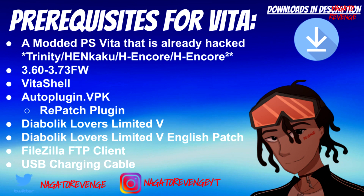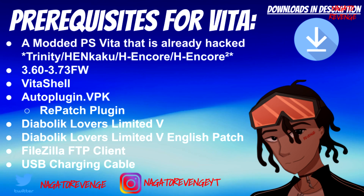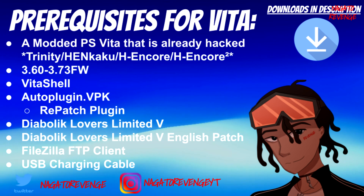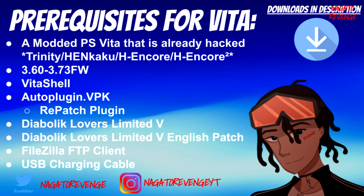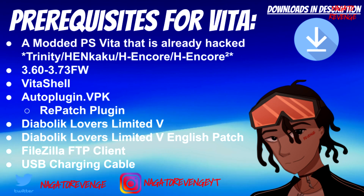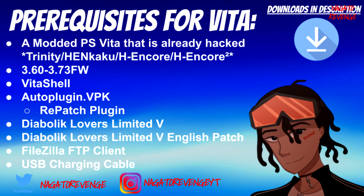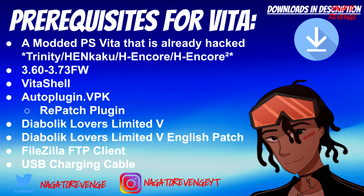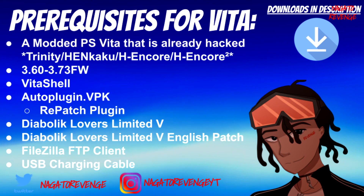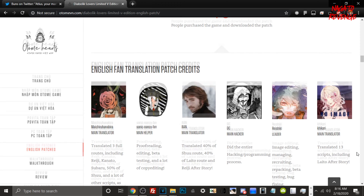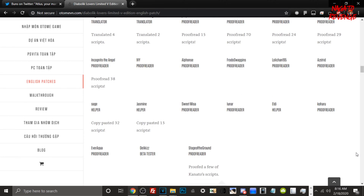As long as your Vita can run unsigned code you're basically good to go. This works from firmware 3.60 to 3.73. You also need the latest version of VitaShell, the latest version of AutoPlugin.vpk, and the rePatch plugin — I'll show you how to install that. You will need a legit copy of Diabolik Lovers Limited V, whether using a NoNpDrm dump or the official cartridge. You'll also need the Diabolik Lovers Limited V English patch — once again I can't provide the link. And last but not least, for transferring your files you'll need FileZilla FTP client or a USB charging cable. With that out of the way, special thanks to all the people who worked on the patch.